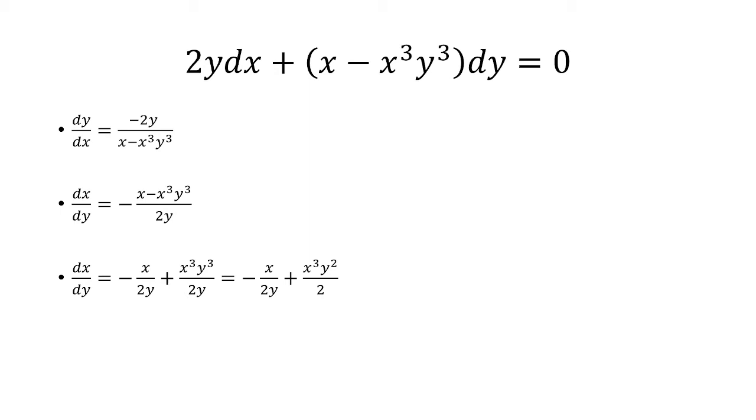Now the next step is to simplify this. So y cubed over y becomes y squared. And so we have dx over dy is equal to negative x over 2y plus x cubed y squared over 2. And now we add both sides by x over 2y.